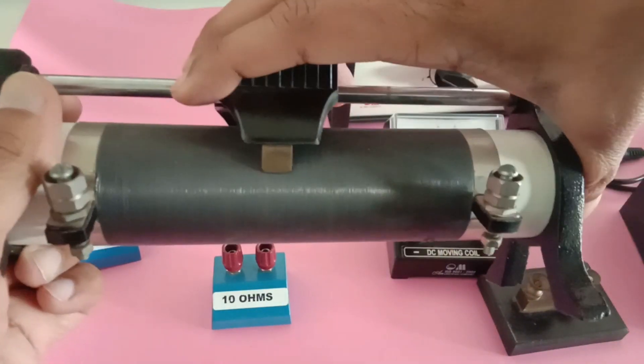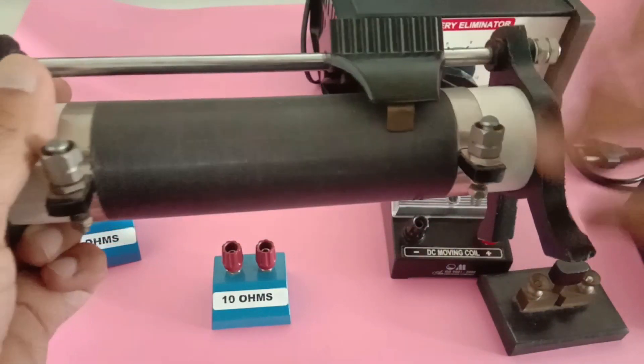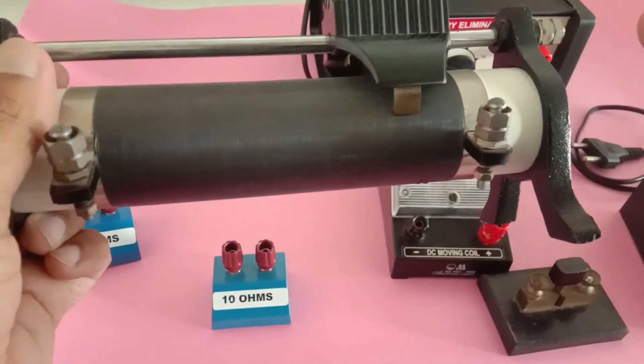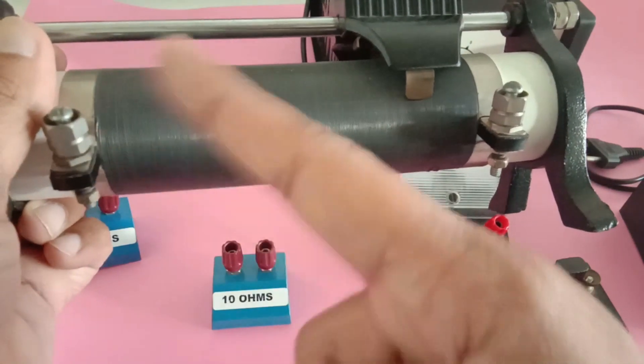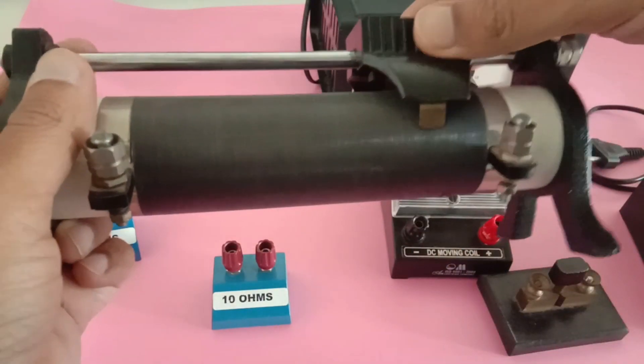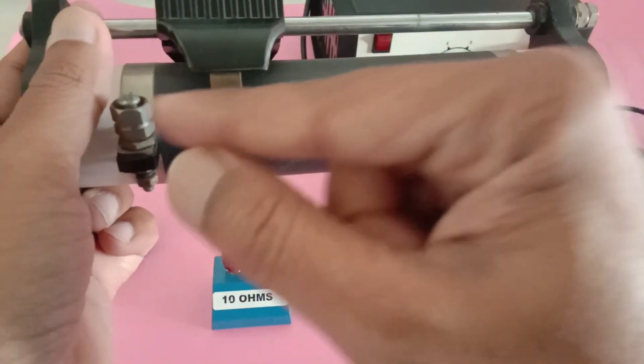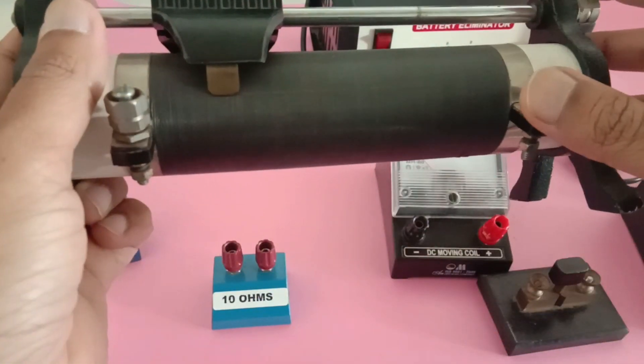If I do it like this, the current has to pass through more turns before exiting. That means I am increasing the resistance. Resistance is directly proportional to the length of the conductor. But if I do it like this, the current flows through fewer turns, so less resistance.